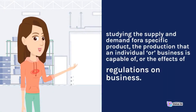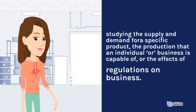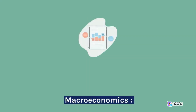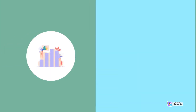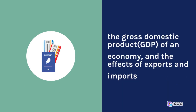Microeconomics covers topics such as the supply and demand for a specific product, the production that an individual or business is capable of, or the effects of regulations on a business. Macroeconomics is the study of a national economy as a whole, focusing on issues such as unemployment rates and the gross domestic product (GDP).